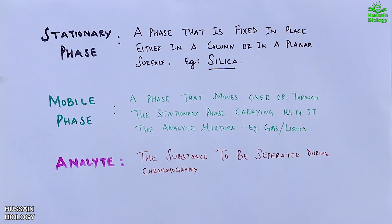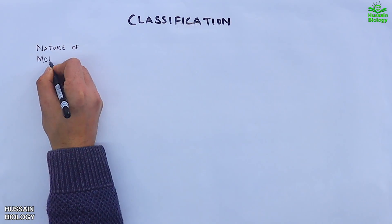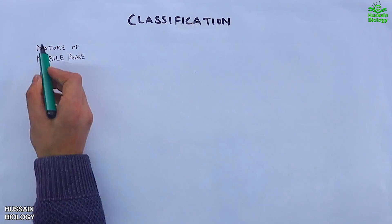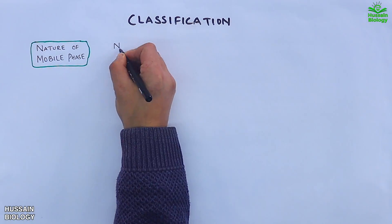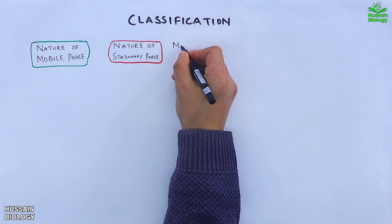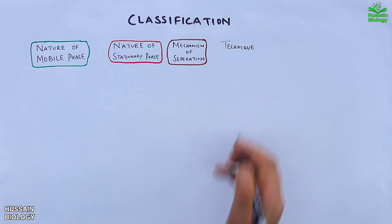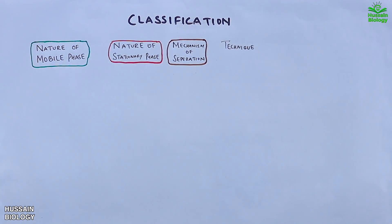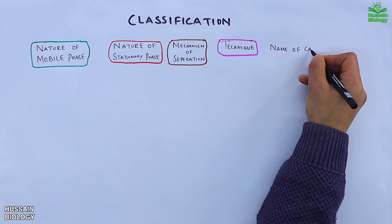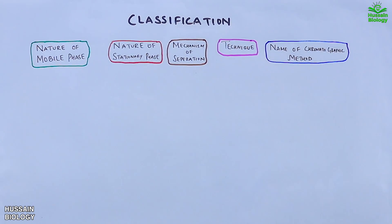Now let's get to the classification of chromatography. We mostly classify on the basis of nature of mobile phase, nature of stationary phase, mechanism of separation, and technique. On the far right we will have the name of the chromatographic method.